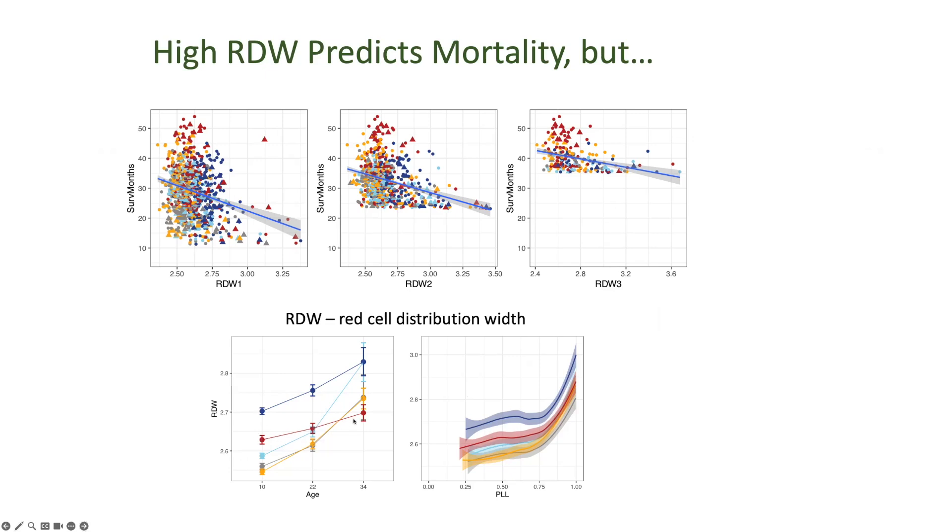So it does appear that the intervention is doing something adverse to the red cells. And yet, the age effect is flattened, and ultimately, they live longer.